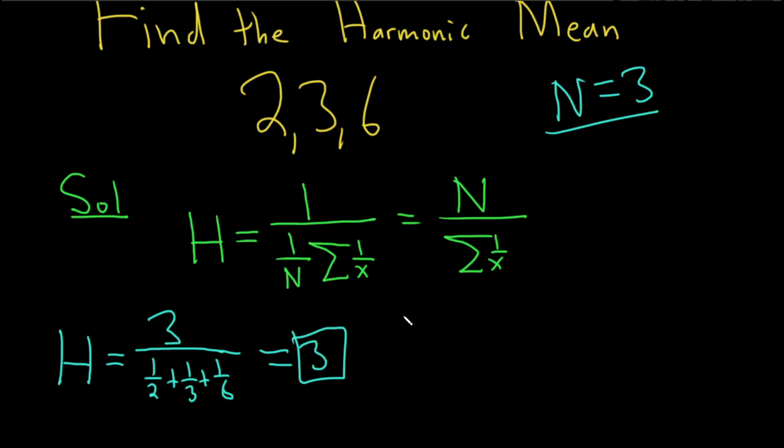So that's how you find the harmonic mean. Again, just use this formula. Your n is 3, and then you just add up the reciprocals, and boom, you're good to go. I hope this has been helpful. Good luck.